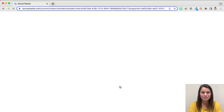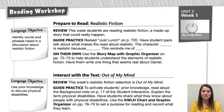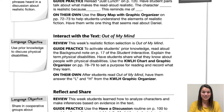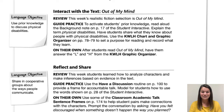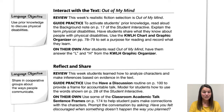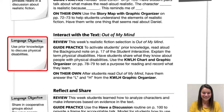I'm going to tap to open that. The Language Awareness Handbook has scaffolded activities for your reading workshop, your reading writing bridge, and your writing workshop. Here I've navigated to the reading workshop section for the lesson I am teaching. As I look through this, I notice there are language objectives to the left for both the Prepare to Read, Interact with the Text, and the Reflect and Share. For this lesson, I chose the language objective that went with Interact with the Text because that is my main focus for this lesson.